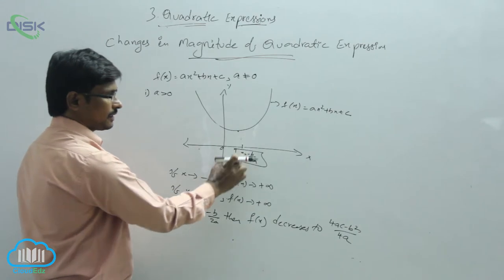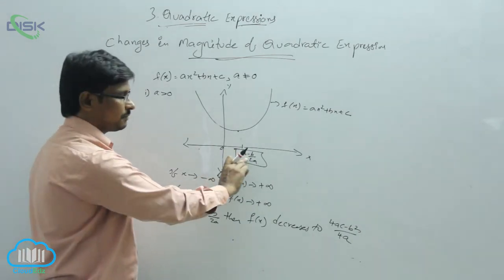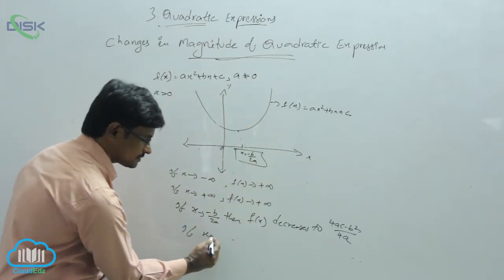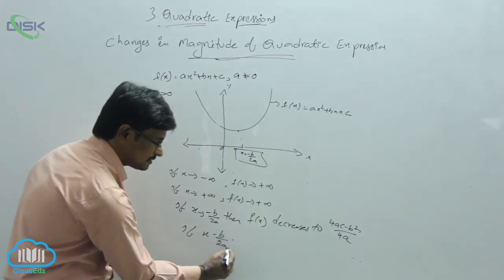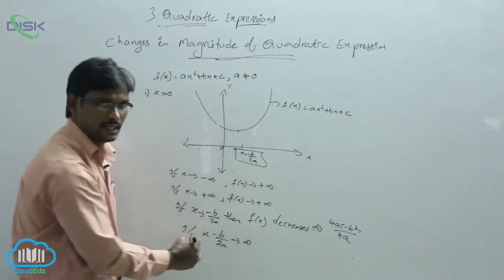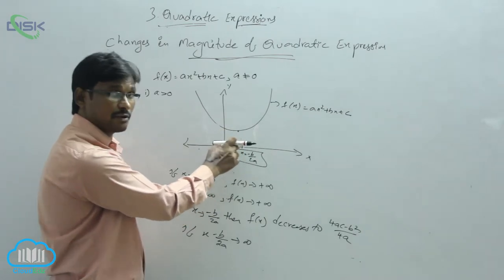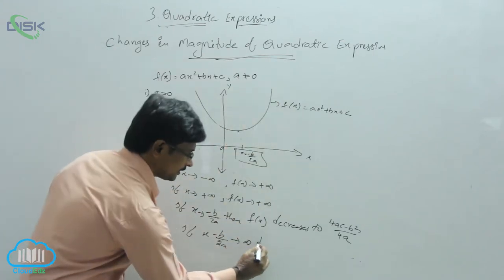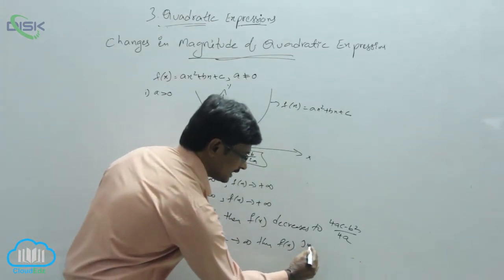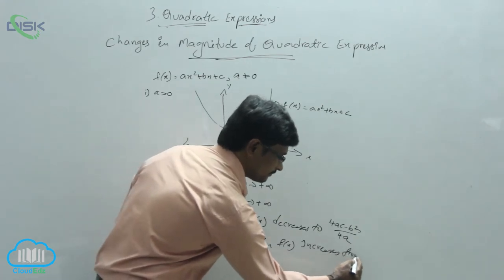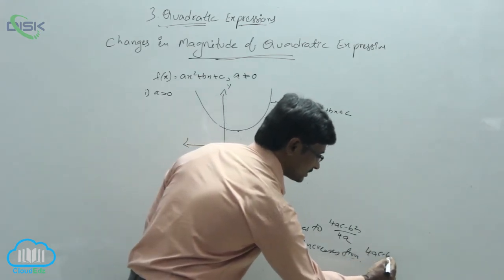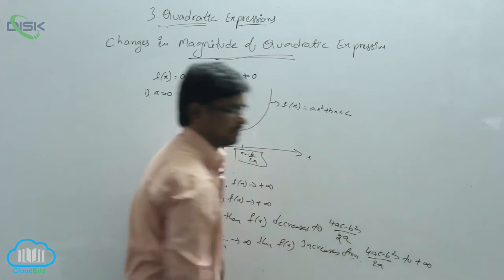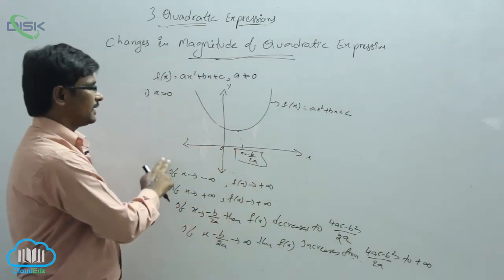Similarly, if x increases from −b/2a toward positive infinity, then f(x) increases from its minimum value (4ac − b²) / 4a to positive infinity. This completes the case where a is greater than 0.